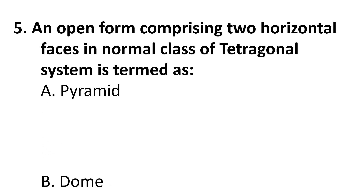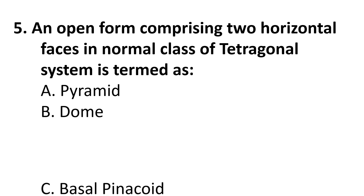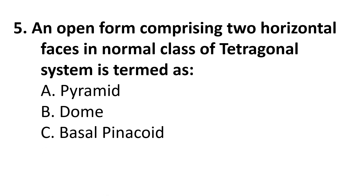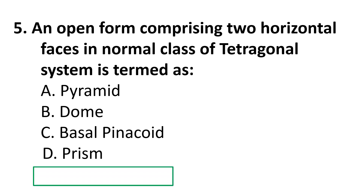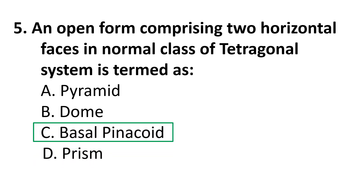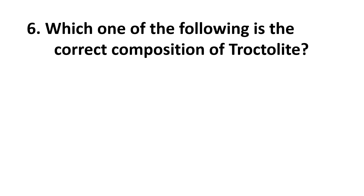Question 5: An open form comprising two horizontal faces in the normal class of the tetragonal system is termed as: A) Pyramid, B) Dome, C) Basal Pinacoid, D) Prism. The correct answer is C) Basal Pinacoid.